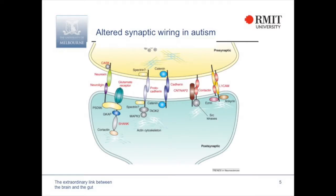We're really interested in studying these in my lab. In this diagram of a synapse, you can see a lot of the names of these molecules — in red are the ones that have already been identified as gene mutations in patients with autism. We're particularly interested in studying this pathway and one of the genes in this family.